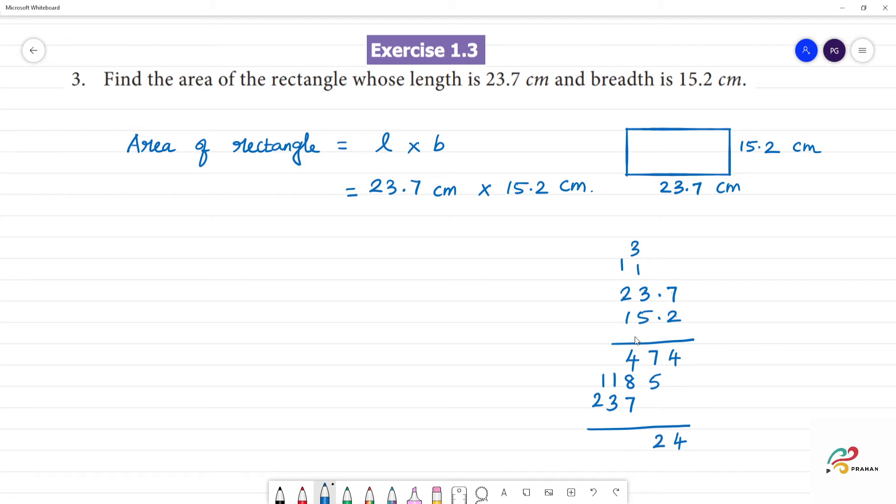Now we add. 7 plus 5 is 12, remainder 1. 8 plus 5 is 13, 13 plus 1 is... 8 plus 5 is 13, 13 plus 7 is 20, remainder 2. 3 plus 3 is 6, 2 plus 1 is 3.